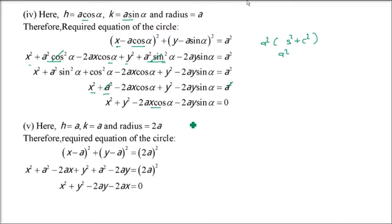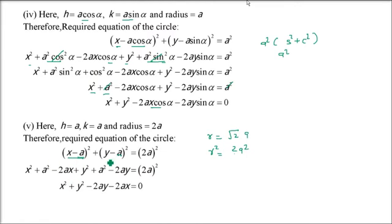The next part: center is (a, a) and radius is √2·a. So h = k = a, and r² = (√2·a)² = 2a². Expanding: x² + a² - 2ax + y² + a² - 2ay = 2a². The 2a² cancels from both sides, giving x² + y² - 2ax - 2ay = 0 as the equation of the circle.